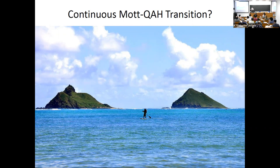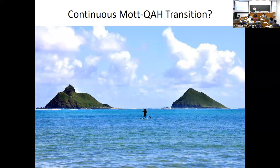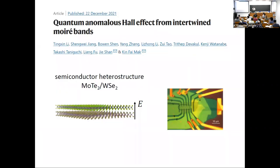So the question is: imagine a time-reversal invariant system with an odd number of electrons per unit cell. We know one type of state is the Mott insulator, and in principle it can also realize a quantum anomalous Hall state at the same filling. Can we tune the system to achieve a continuous direct transition between the two by only tuning one parameter? I was motivated to think about this by recent experiments from the Cornell group.